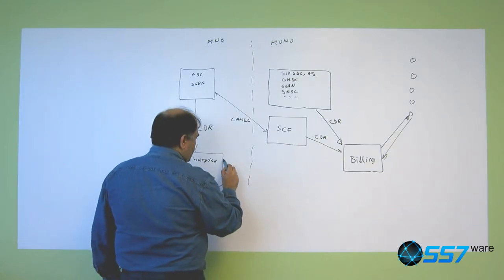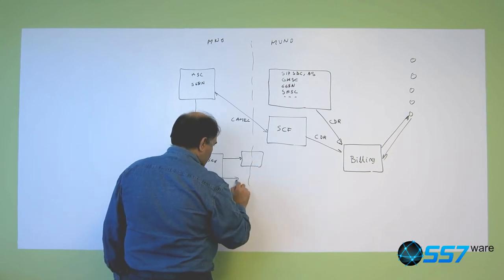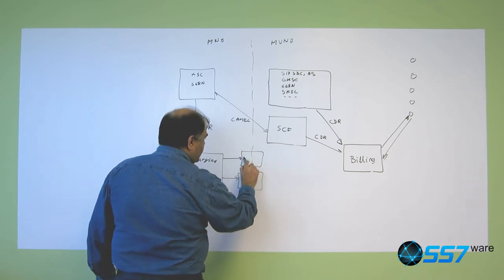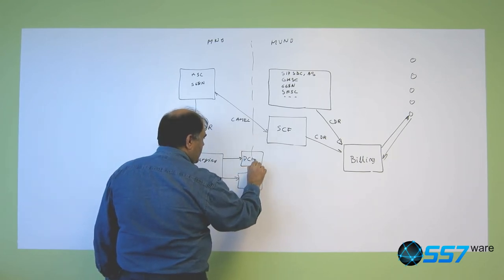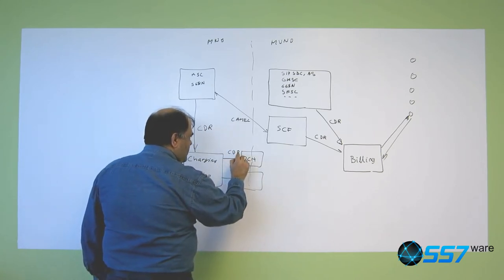First goes to something called the data clearinghouse, where the CDRs are going.